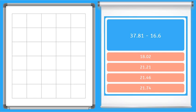Okay our next one is 37 and 81 hundredths and we are subtracting 16 and six tenths. Notice I lined up the decimal. I did not move this all the way over to the right because I have to have the decimals line up.